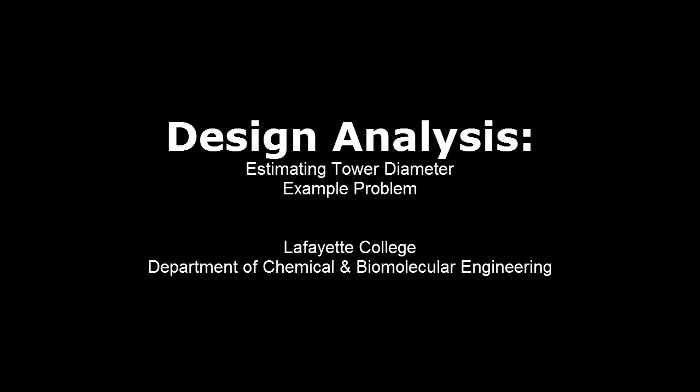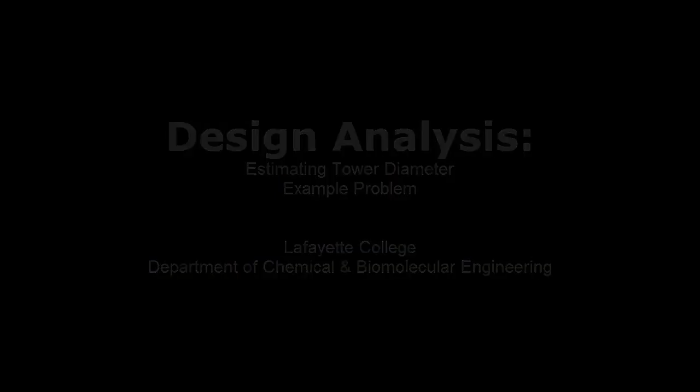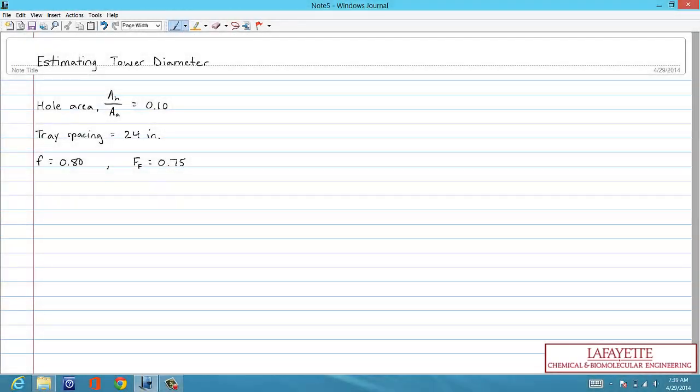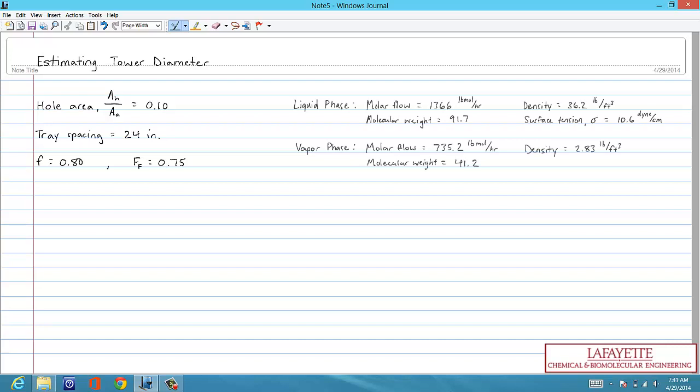This screencast demonstrates a sample design analysis homework problem for estimating the diameter of an absorber column used to separate a light hydrocarbon feed. From the problem statement, the column utilizes sieve trays that have a hole area of 10% and 24 inch tray spacing. The problem also states that we can assume 80% of vapor flooding velocity and a foaming factor of 0.75. Specifications for the liquid and vapor phases are also given.